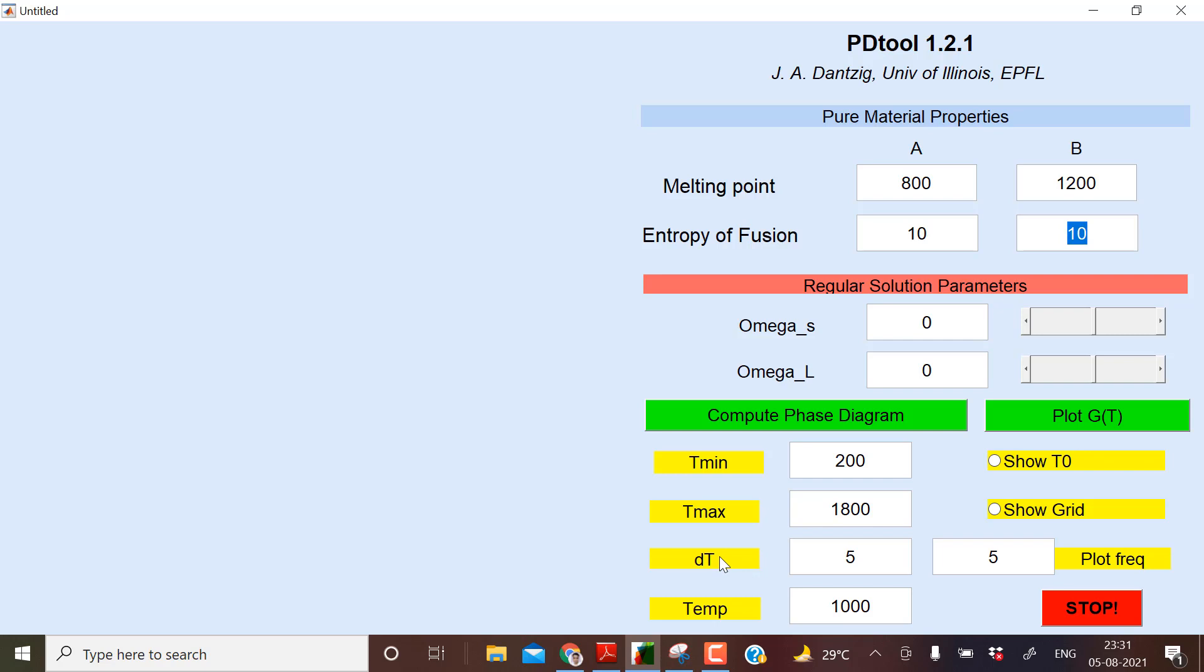Then dT - dT means when the algorithm calculates, what is the step size in which this making of this phase diagram will be followed? The G versus X diagram is plotted at every temperature and accordingly we get the phase diagram. So this is the step size. And when we want to plot G versus T at a particular temperature, then we need to write this temperature and we need to click over here, like show GT.